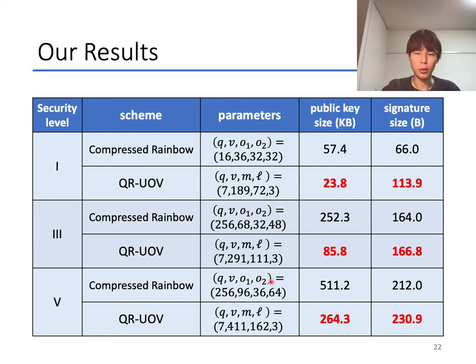As a result, the public key size of QR-UOV can be reduced by approximately 50% to 70% compared with that of compressed Rainbow at the cost of a small increase in signature size.